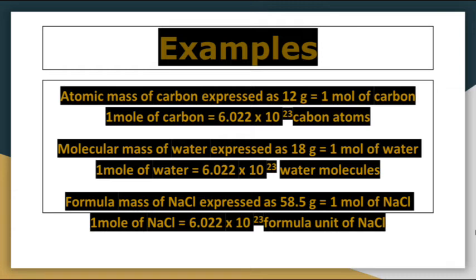Example: The atomic mass of carbon is expressed as 12 gram, meaning 12 gram of carbon is considered as 1 mole of carbon. 1 mole of carbon contains 6.022 × 10²³ carbon atoms. Similarly, the molecular mass of water is expressed as 18 gram, meaning 18 gram of water equals 1 mole of water, which contains 6.022 × 10²³ water molecules.